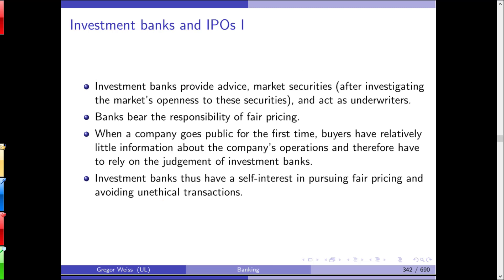Investment banks also support clients in the aftermarket by stabilizing the market if prices fall. To summarize, investment banks support clients through research, company valuation, due diligence, advice, access to institutional investors, marketing securities, and acting as underwriter. When a company goes public for the first time, buyers have limited information and rely on the judgment of investment banks. The choice of a well-known investment bank — such as Goldman Sachs or JPMorgan — signals quality to investors, giving banks a self-interest in fair pricing and avoiding unethical transactions.